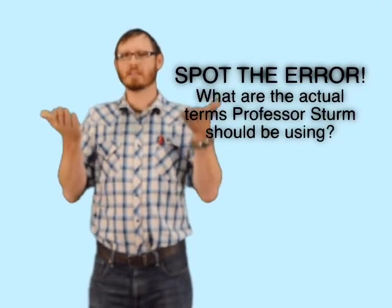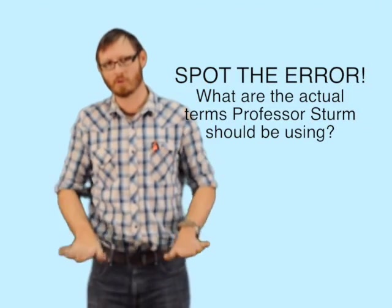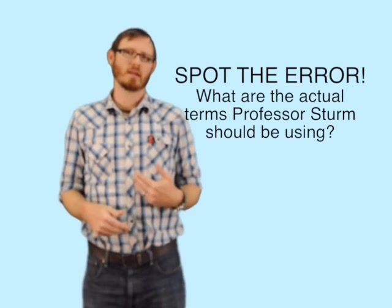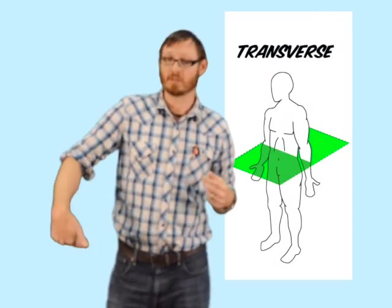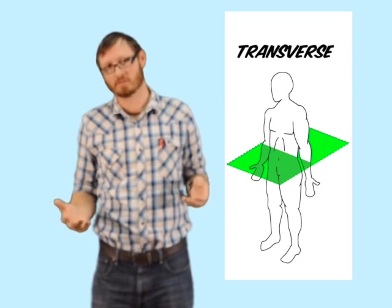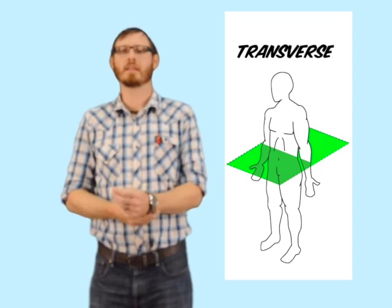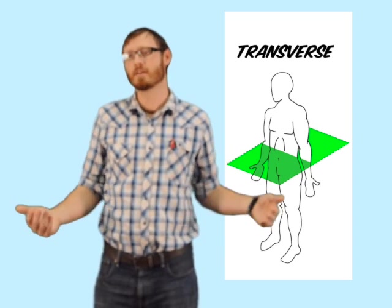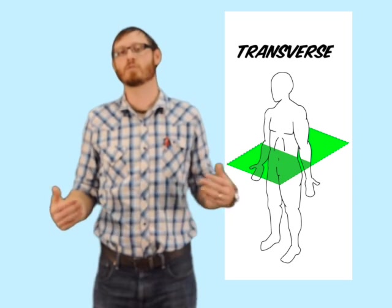Any time we separate the body into a right and left portion, that is a sagittal section. If we cut the body such that we have an anterior portion and a posterior portion — like cutting right through where a belt line is — that can be referred to as a transverse section, or we can also call it a cross-section. Depending on which healthcare professionals you work with depends on which term they prefer, so you should know both terms.